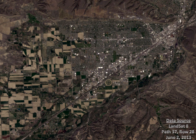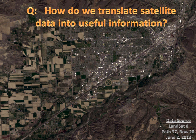This concept module begins with a question: how do we translate satellite data into useful information? A good starting point for addressing this question is the scene derived from the Landsat 8 satellite's Operational Land Imager, or OLI, sensor when it flew over Billings, Montana on June 2, 2013.